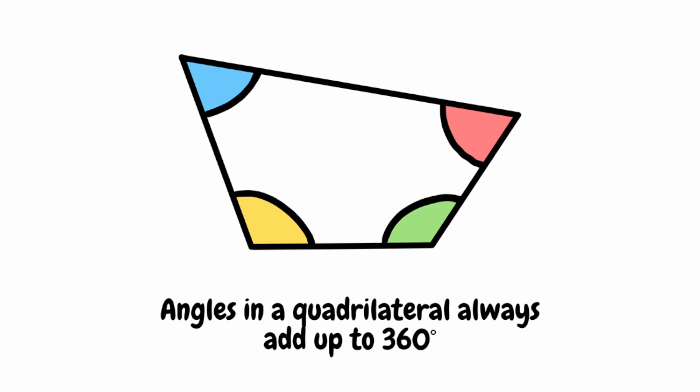In this video we're going to take a look at some questions involving angles in quadrilaterals. To be able to go through these questions today we need to understand one of our important angle rules, and that is the angles in a quadrilateral, so the angles in any four-sided shape will always add up to 360 degrees.